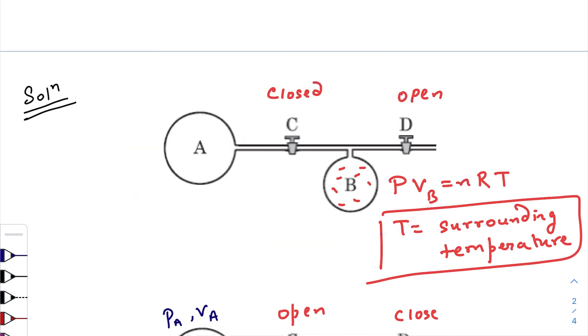This is the initial situation when this valve is closed and this is open, when the ideal gas is being transferred in flask B at pressure P. So this will be the equation: PVB = nRT, where n is the number of moles and T is the surrounding temperature.